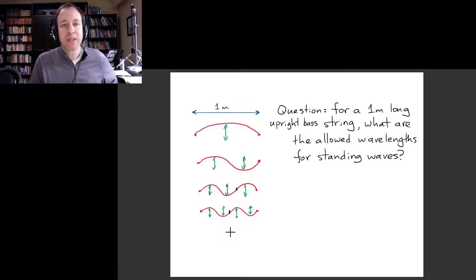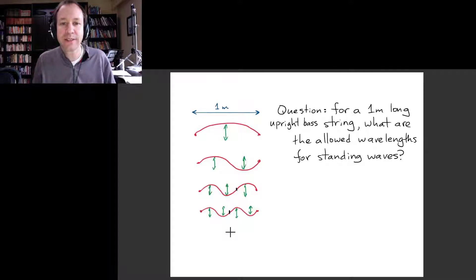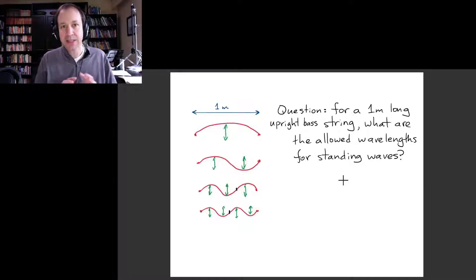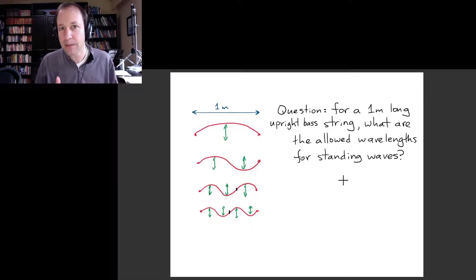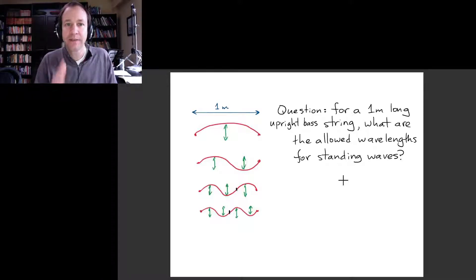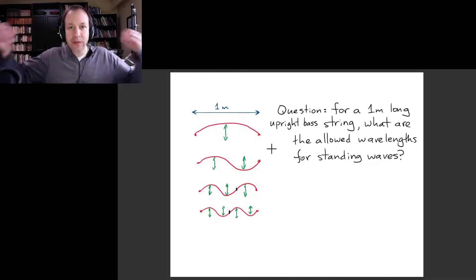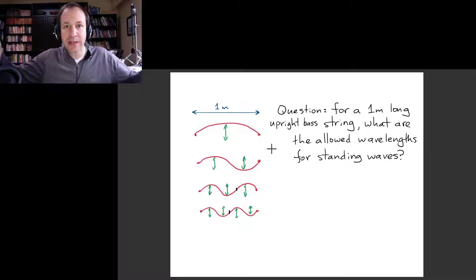Here's a question to start: the string has a length of one meter, which is a typical length for an upright bass — that's the example we're using. We want to predict what frequencies that upright bass string can oscillate at in simple harmonic motion. The first step is to find the allowed wavelengths for these oscillations, given that we require a node at both ends of the string. Pause the video and take a couple of minutes to work this out.